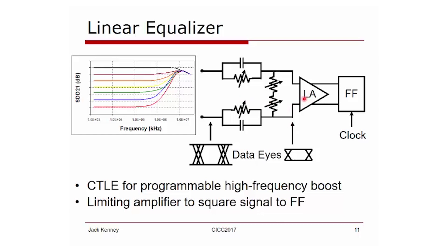So we have a limiting amp. The idea of the limiting amp is, let's say you have 50 millivolts coming out of your continuous time linear equalizer, your limiting amp boosts it to full swings, like 600 millivolts peak to peak differential.